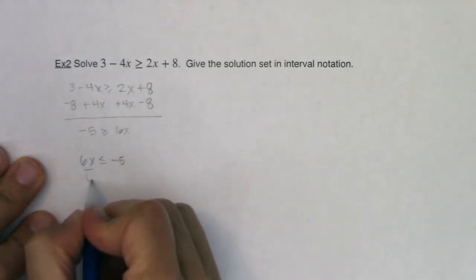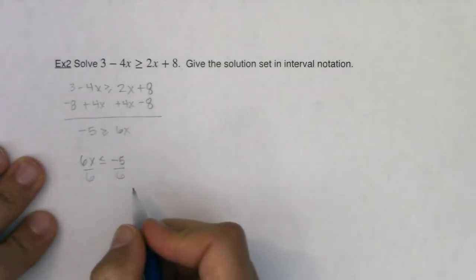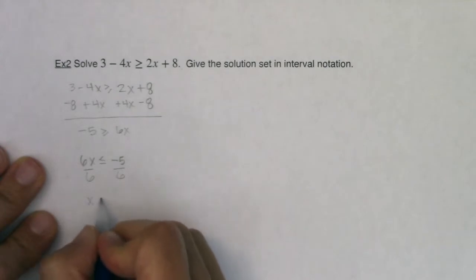So then I will divide both sides by 6 and I will wind up with x being less than or equal to negative 5/6.